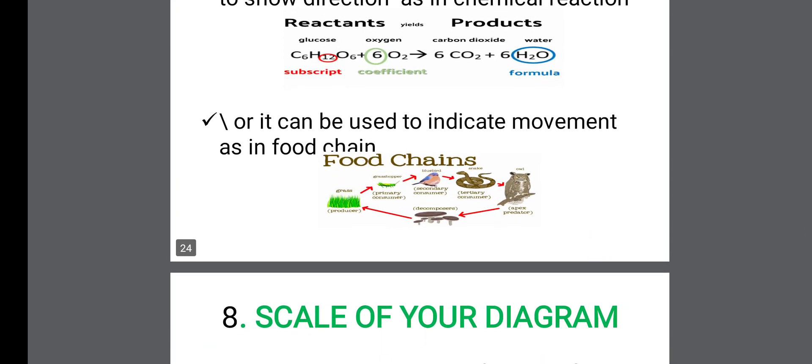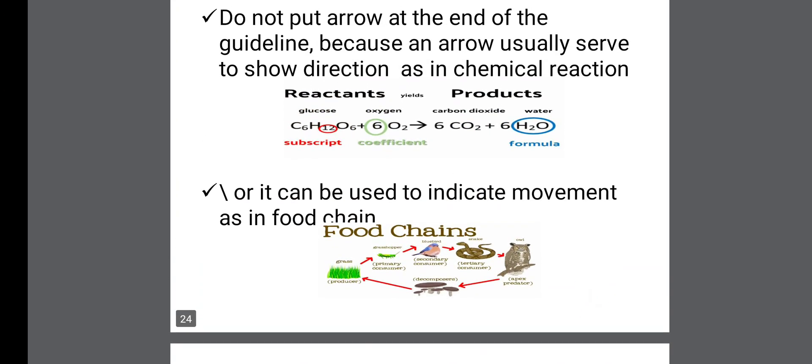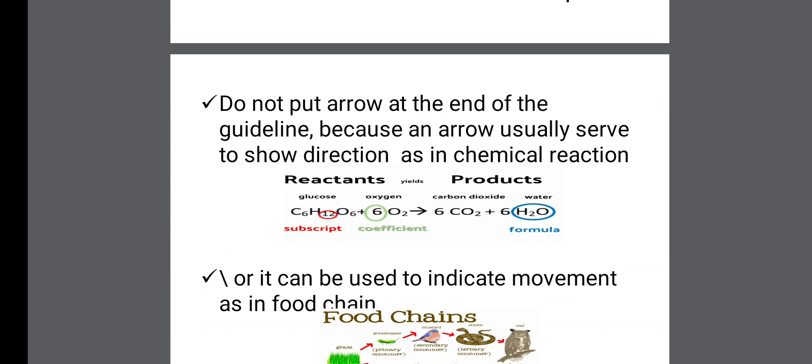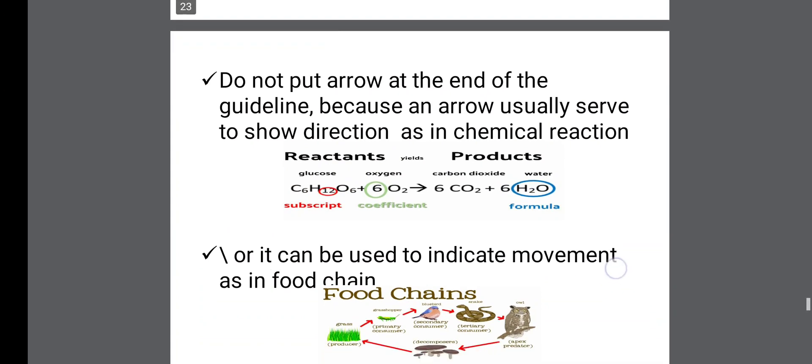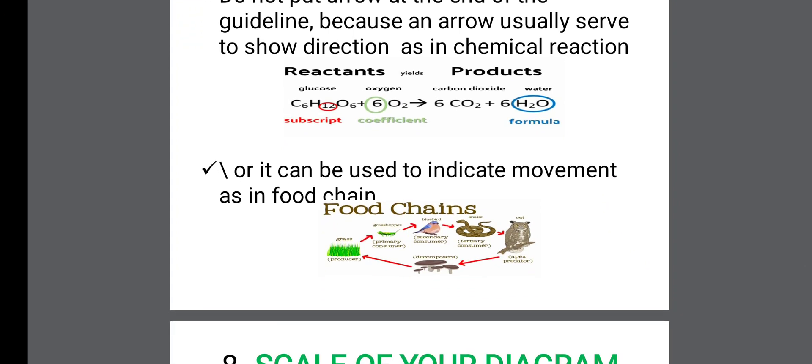It is used in chemical equation. You might cause confusion when labeling by the time you put an arrow. It is as if you are writing in a chemical equation. Or in some cases it looks as if you are drawing a food chain. See if you are drawing a food chain, because lines can be used to indicate movement as in food chain.